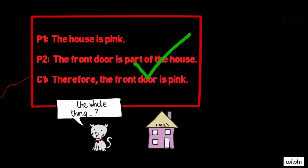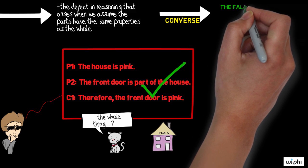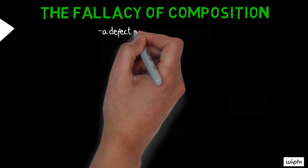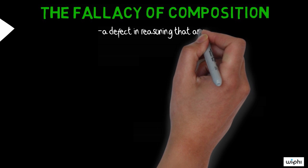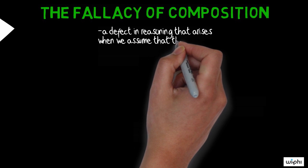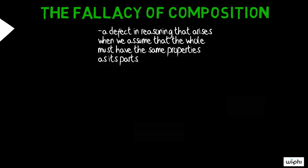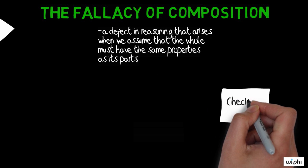It's interesting to note that this fallacy is also the converse of the fallacy of composition, which says that it's fallacious to infer that what is true of the parts of something is also true of the whole those parts compose. These fallacies are quite similar, so you might want to check out that video as well.